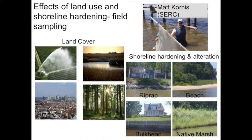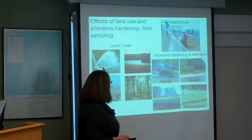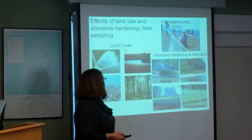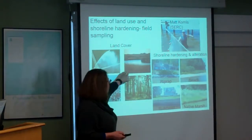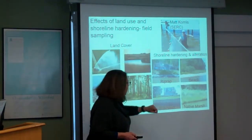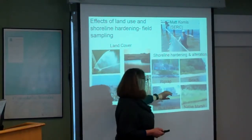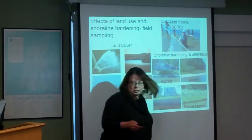This is kind of what you've seen before. What we did is we looked at land cover, including agriculture, forest, developed land, and marshes — especially near shore. And then we looked at right along the shore what kind of structures were there, whether it was riprap, bulkhead, native marshes, or beach.